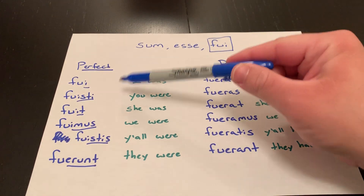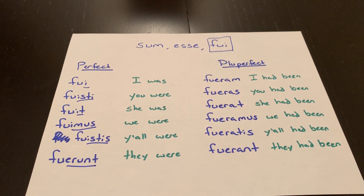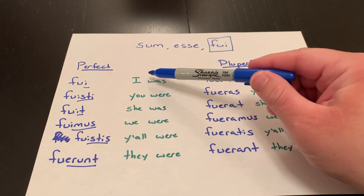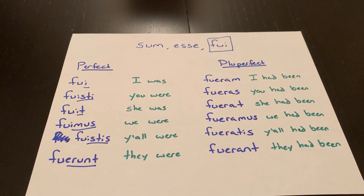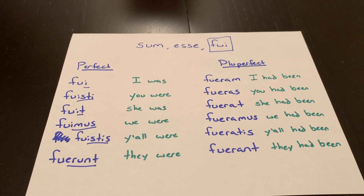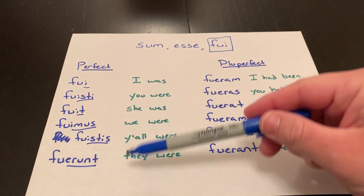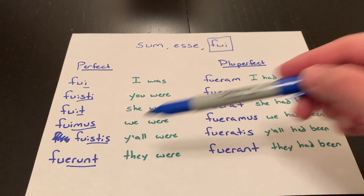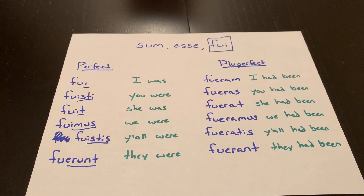You would use the perfect of the verb 'to be' to really emphasize that something is no longer the case. So if I said ERAM LAETUS, that's just talking about how I was happy. But if I said FUI LAETUS, that really emphasizes 'I was happy, but now I'm not anymore,' because that action has ended in the perfect. We will almost never see these in readings — you'll see the imperfect a lot more — but it's worth knowing how they're made.